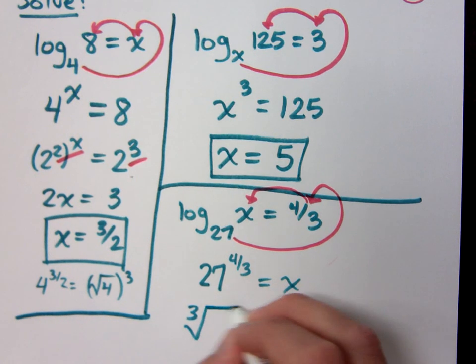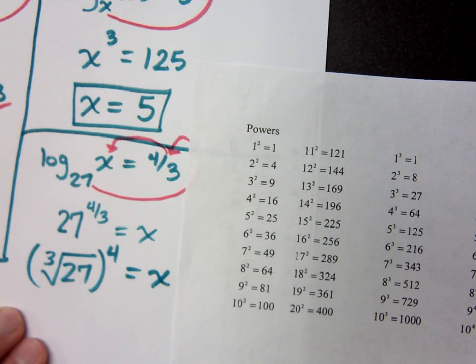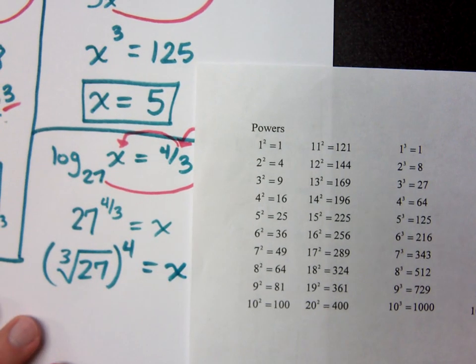Well, you know what I have, don't you? I got my list of powers here, right? What's the cube root of 27? 3. And then 3 to the 4th, I move over here.